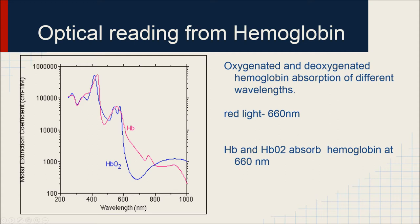The absorption of red light by hemoglobin, as you can see by this figure, is that both oxygenated and deoxygenated hemoglobin are able to absorb the red light around the 660 nanometer wavelengths.